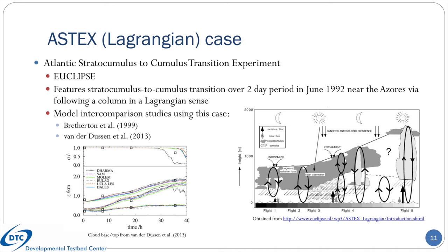Switching gears to shallow convection, the ASTEX, or Atlantic Stratocumulus to Cumulus Transition Experiment, took place near the Azores in the Atlantic Ocean in June of 1992. The case included in the CCPP single-column model repository is the second one, generated by the EUCALIPSE program. It features a column that is translated geographically, following the trajectory of an air mass as it transitions from a purely stratocumulus regime with a well-defined inversion layer to a trade wind cumulus regime with a more diffuse inversion layer and increased surface heat fluxes. In many 3D weather and climate models this transition is often poorly simulated, so this case can provide a challenge for a physics suite to get right.